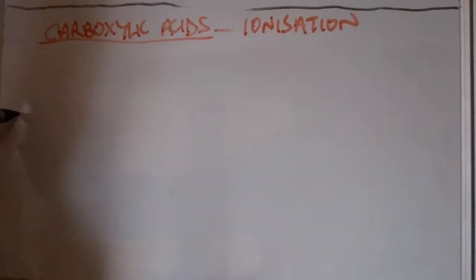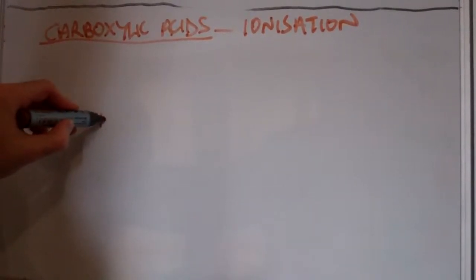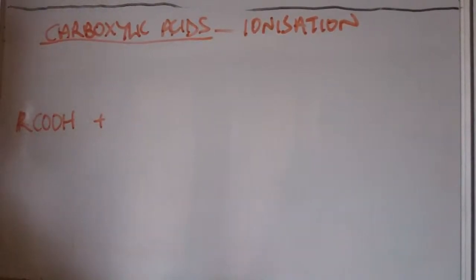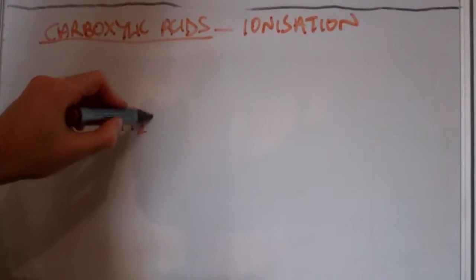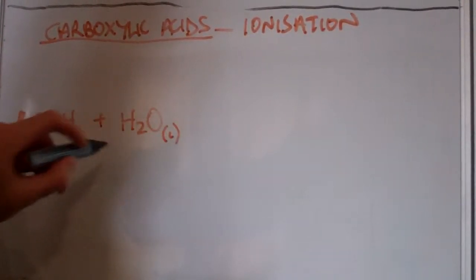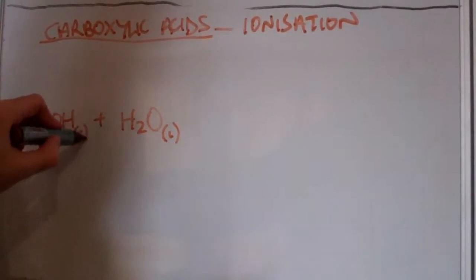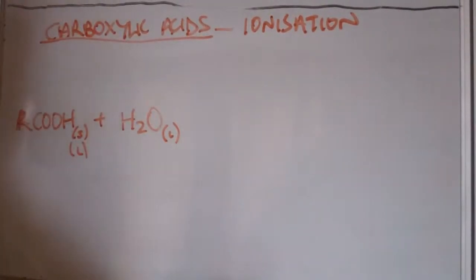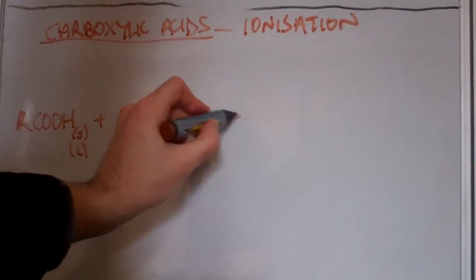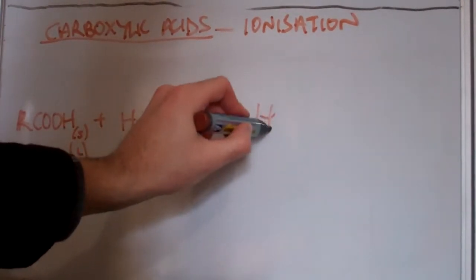What does that look like? We have to have a carboxylic acid, something small that's soluble in water like ethanoic acid, acetic acid. We add it to water, which is in the liquid state. This can be a solid or a liquid, it doesn't really matter. This is an equilibrium reaction.